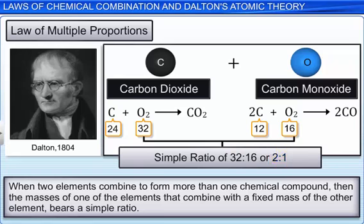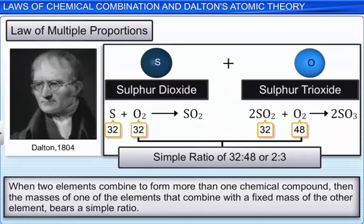In these reactions, a fixed amount of carbon is combining with multiple proportions of oxygen to form carbon dioxide and carbon monoxide. Similarly, when sulfur dioxide and sulfur trioxide are formed, the masses of oxygen bear a simple ratio of 32 is to 48, or 2 is to 3. In these reactions, a fixed amount of sulfur is combining with multiple proportions of oxygen to form sulfur dioxide and sulfur trioxide.